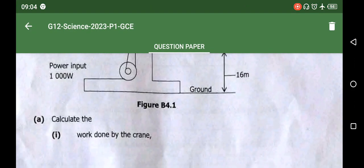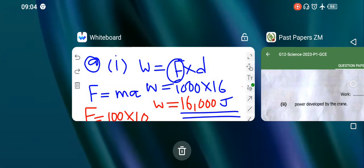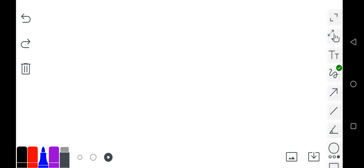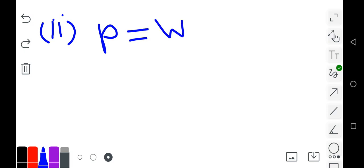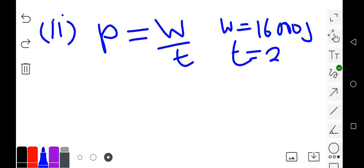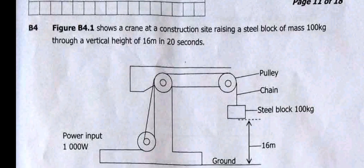Moving on to part two, it says calculate the power developed by the crane. First of all, what is the formula for power? Power equals work done over the time taken. We know that the work done has been found to be 16,000 joules, and the time has been given as 20 seconds.